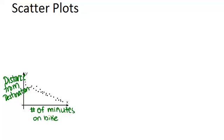In this video we will learn all about scatter plots. A scatter plot is a type of graph that is used to help you determine whether or not a relationship exists between two variables.